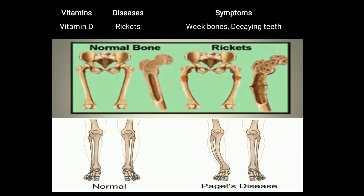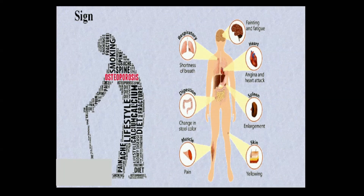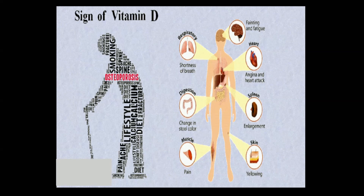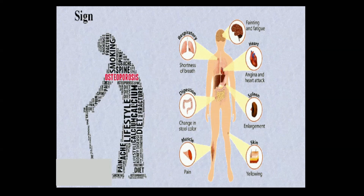Deficiency of vitamin D causes rickets, with symptoms of weak bones and decaying teeth.